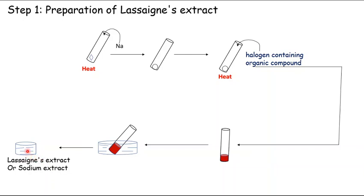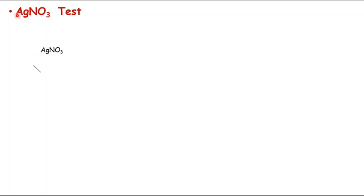In the Lassaigne's extract, sodium fuses with the halogen-containing organic compound. If chlorine is present, we get sodium chloride. If bromine is present, we get sodium bromide. If iodine is present, we get sodium iodide.